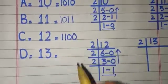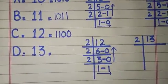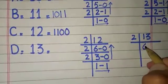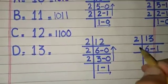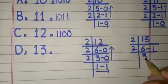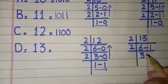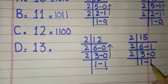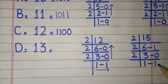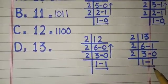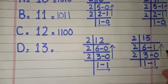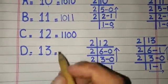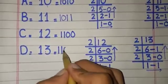1100. Now we check for 13. D is equal to 13. 13 divided by 2 gives 6, remainder 1; 6 divided by 2 gives 3, remainder 0; 3 divided by 2 gives 1, remainder 1. The answer is 1101. So D is equal to 13, which in binary number system is equal to 1101.